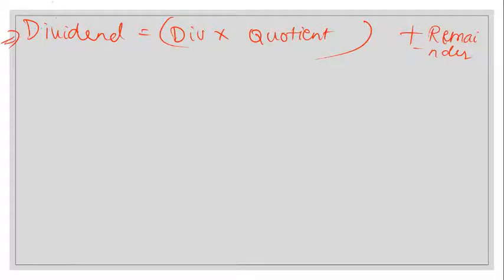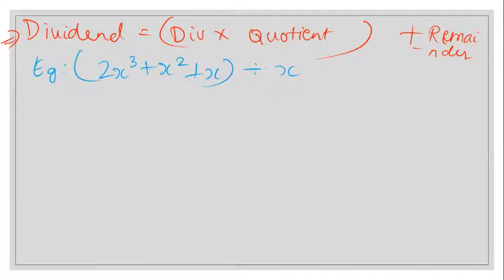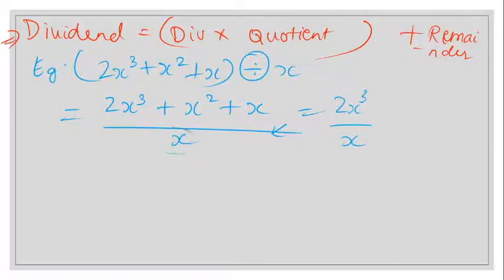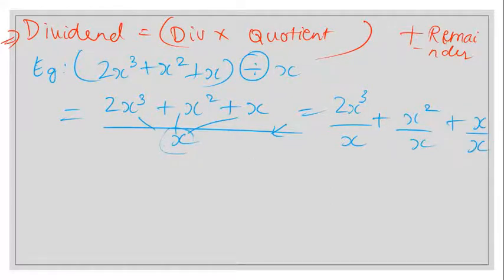Let's take an example: (2x³ + x² + x) divided by x. We write it in standard form. From Chapter 14 on factorization, we split each term: 2x³/x + x²/x + x/x.